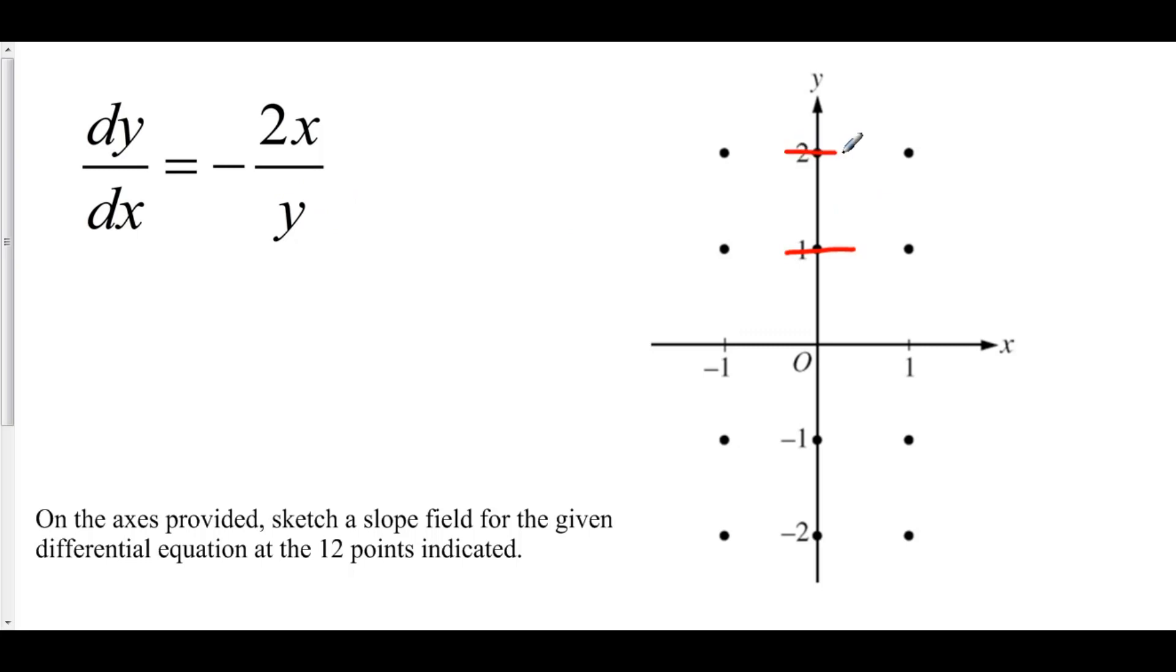So here we have (0, 2), that's a horizontal line. (0, -1), that's a horizontal line. And (0, -2), that's a horizontal line.